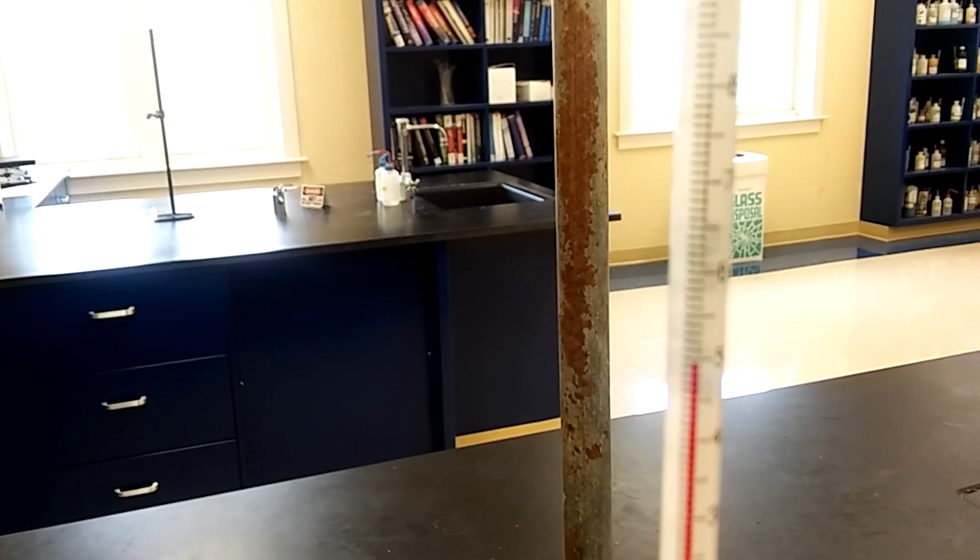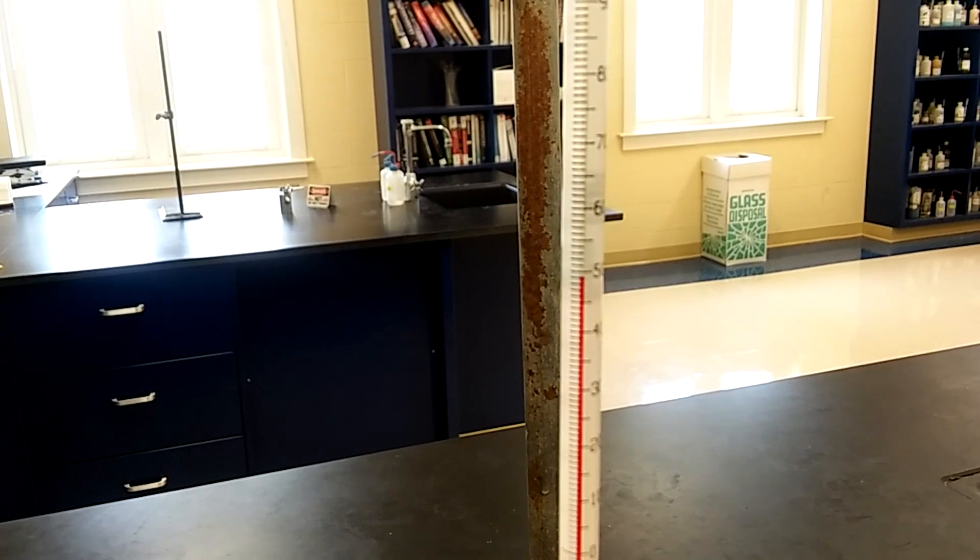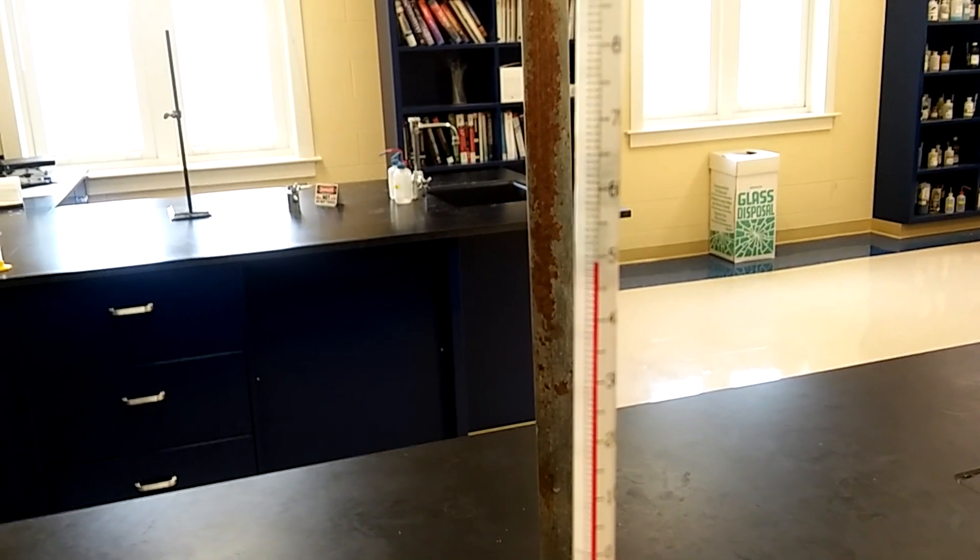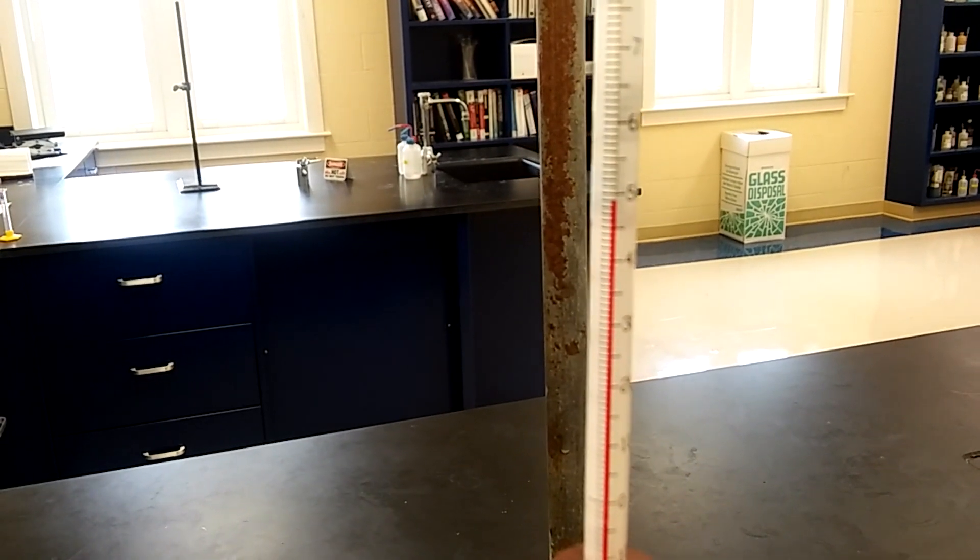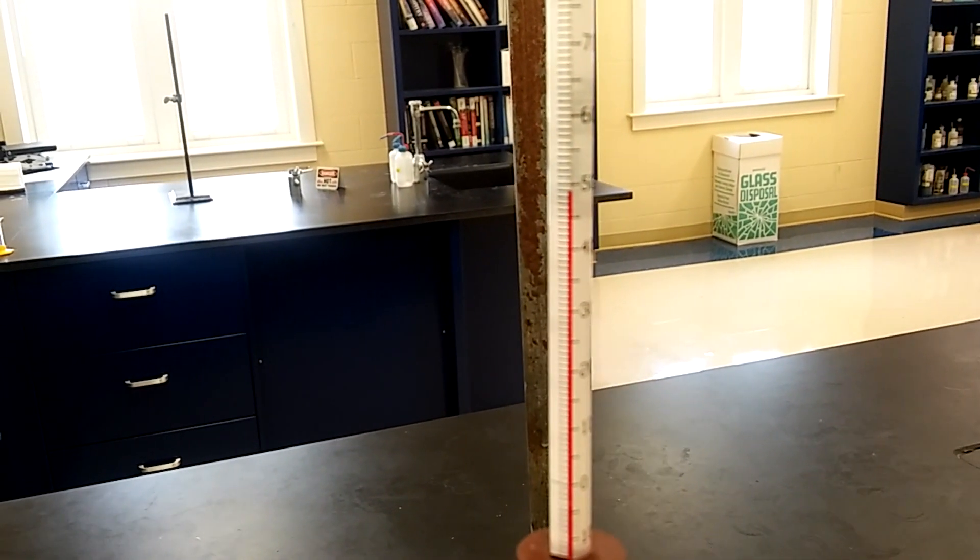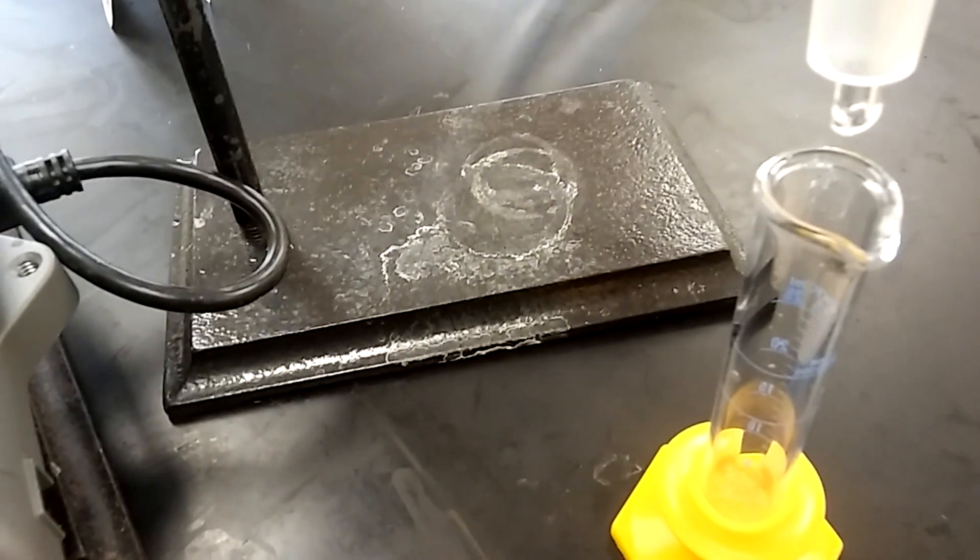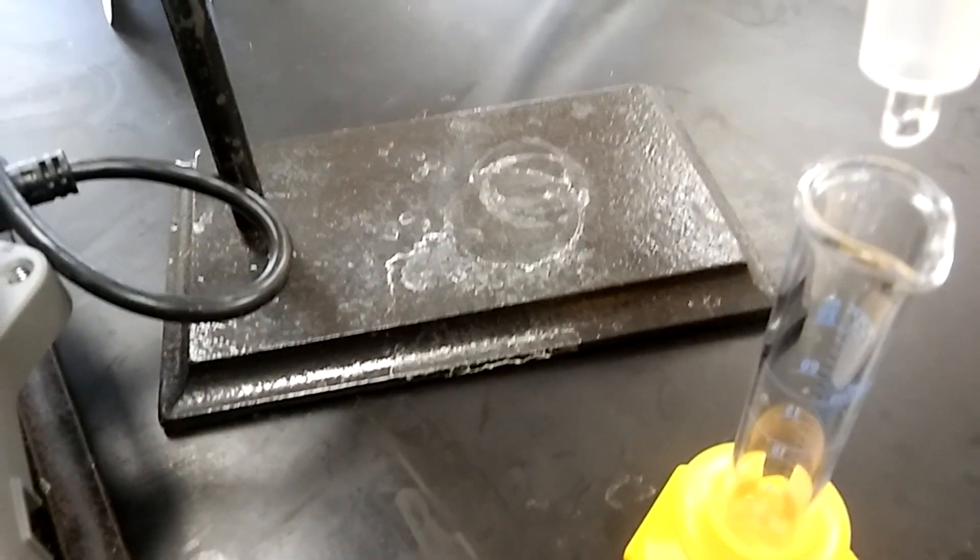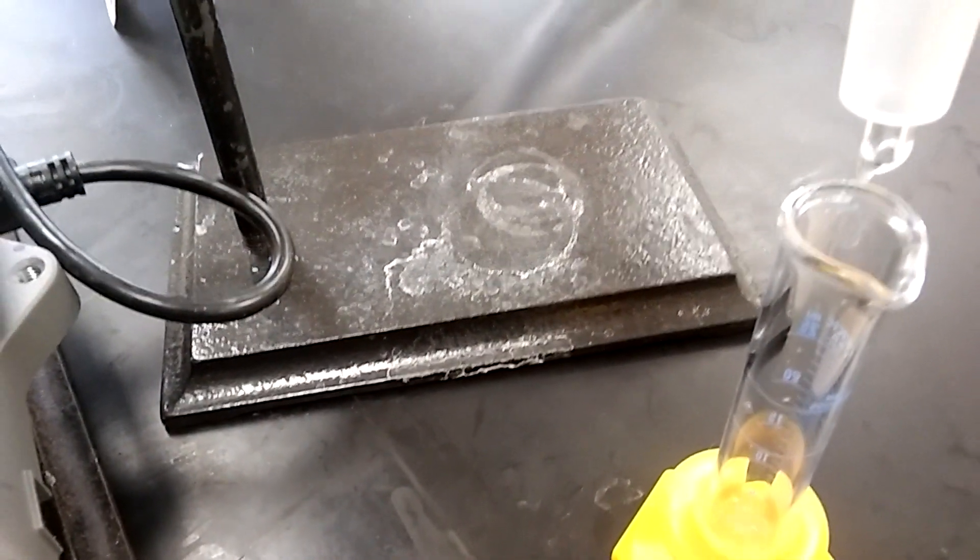I removed that flask I had earlier and put a different one. I started collecting everything that came about 48-49, and when it gets to 52 I'm gonna shut off the heat and put another waste beaker underneath. You can see that's t-butyl chloride right there.